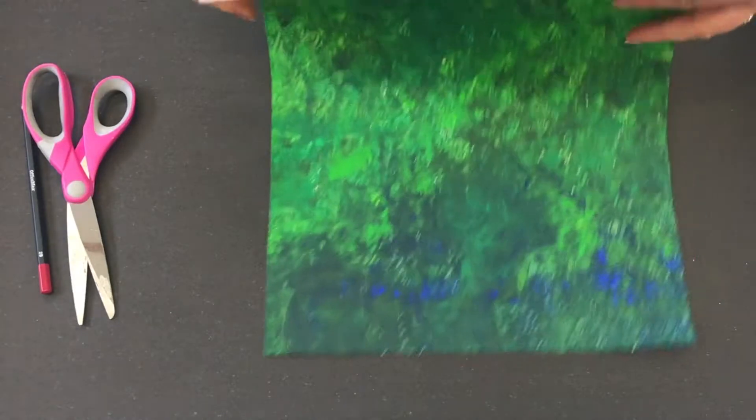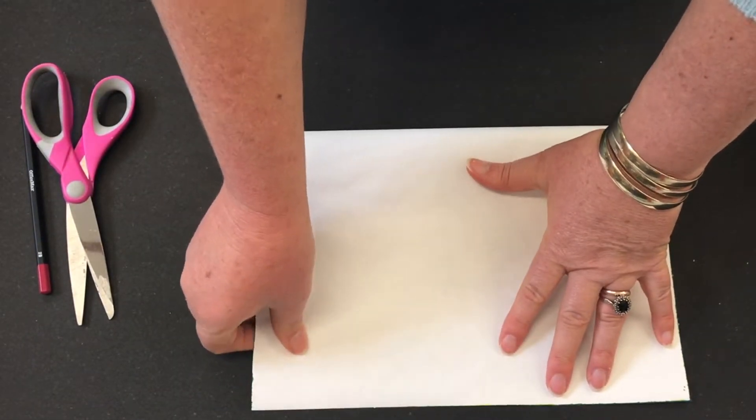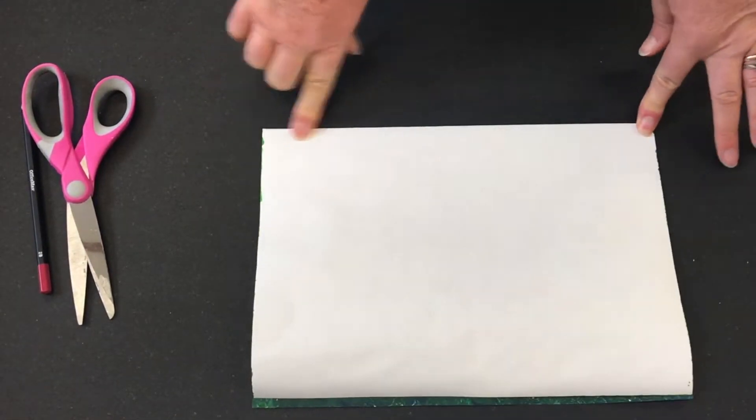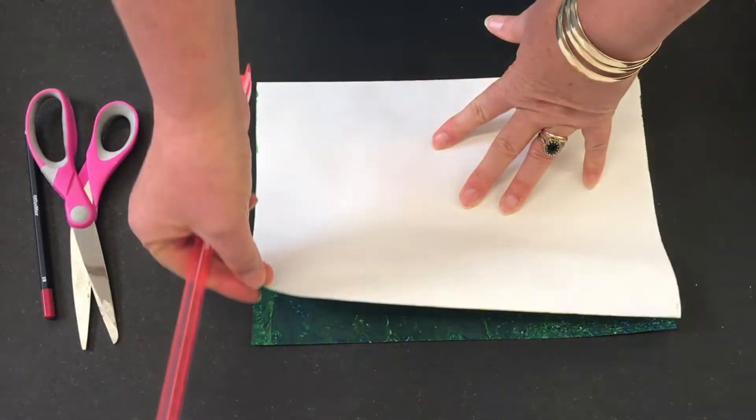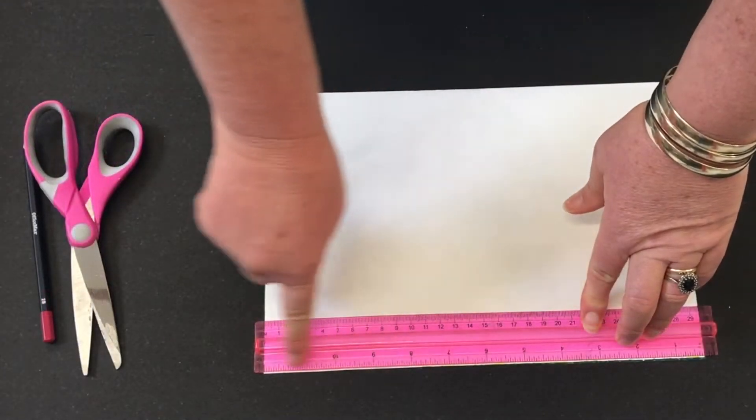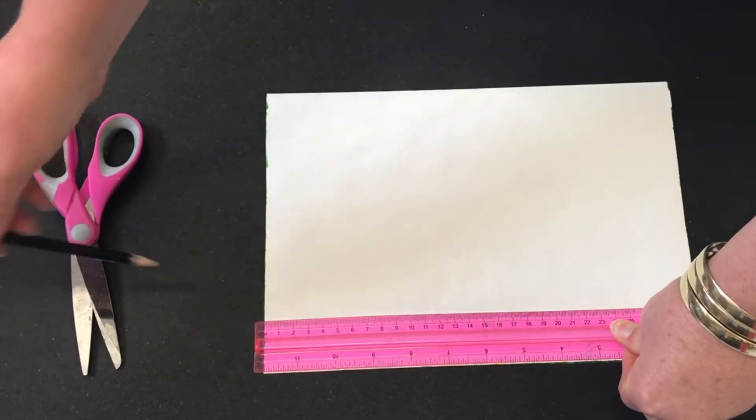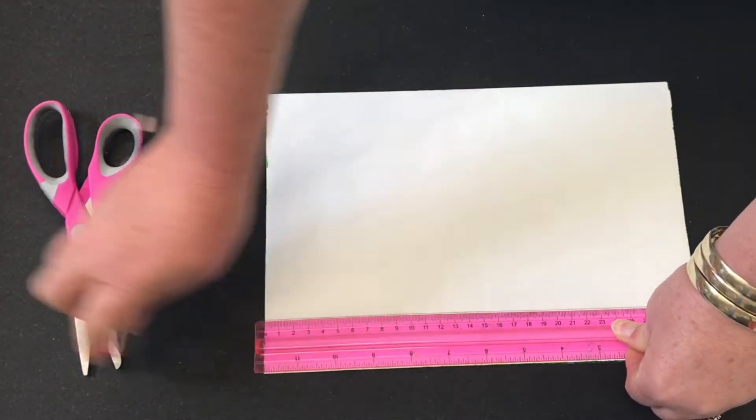To create the loom, fold the paper over with the painted side inside. The two short edges need to be touching here. Lay your ruler across the open end and draw a line the width of the ruler itself. The ruler width is a great tool for getting the right spacing between your lines.